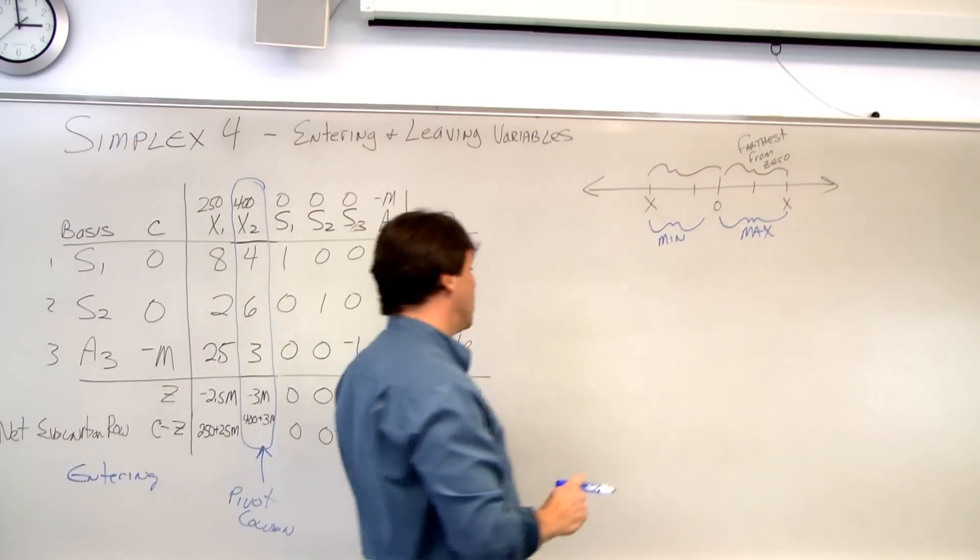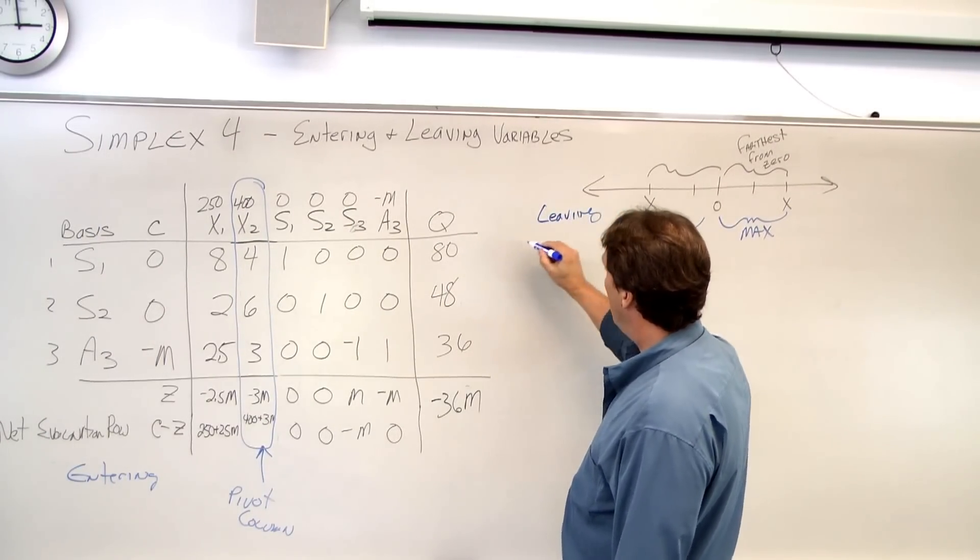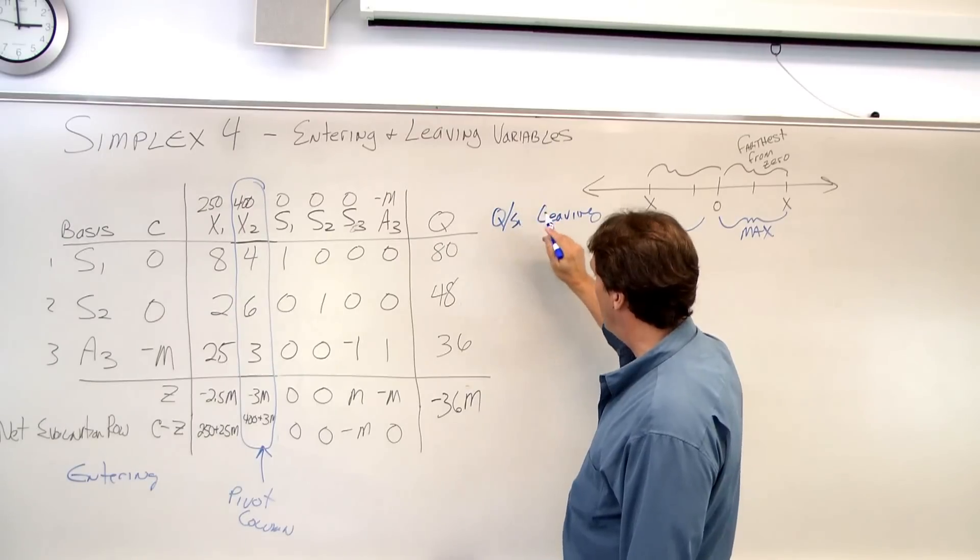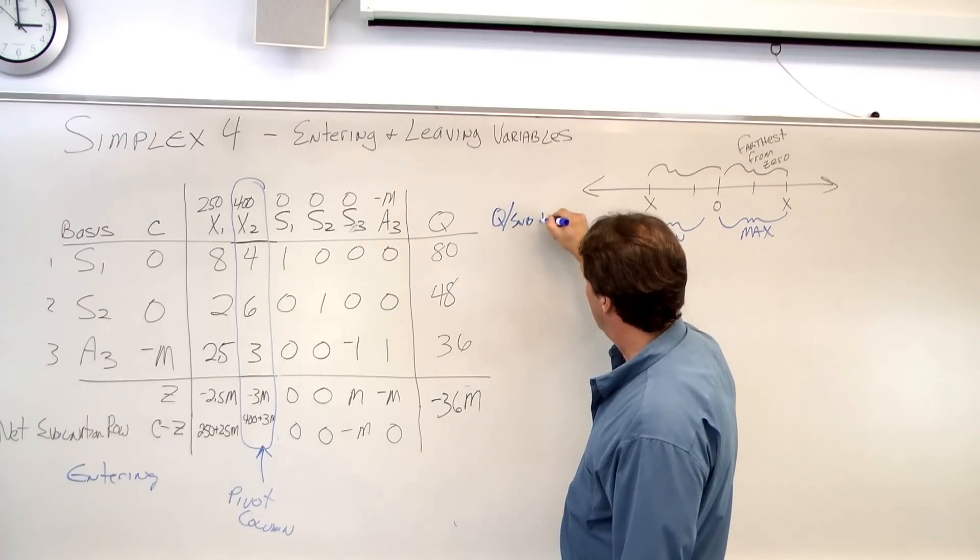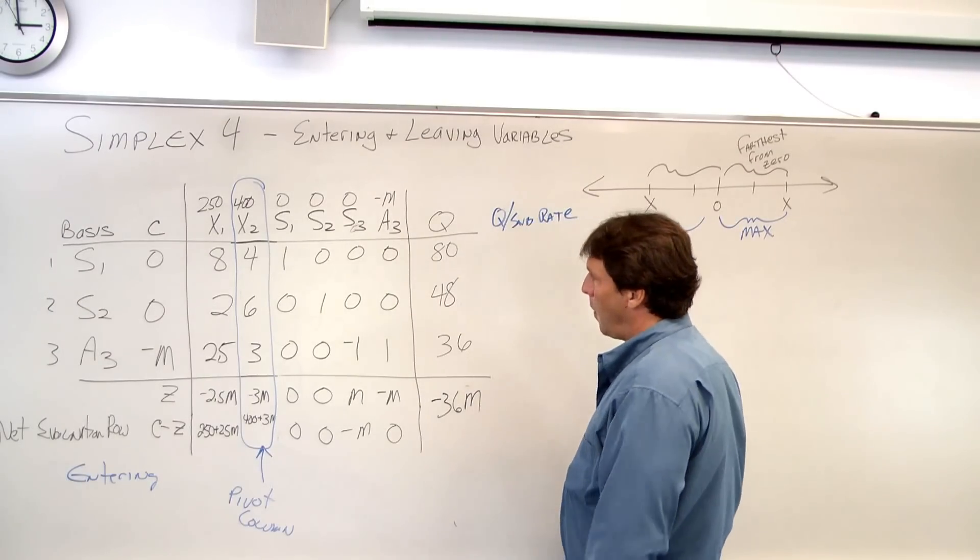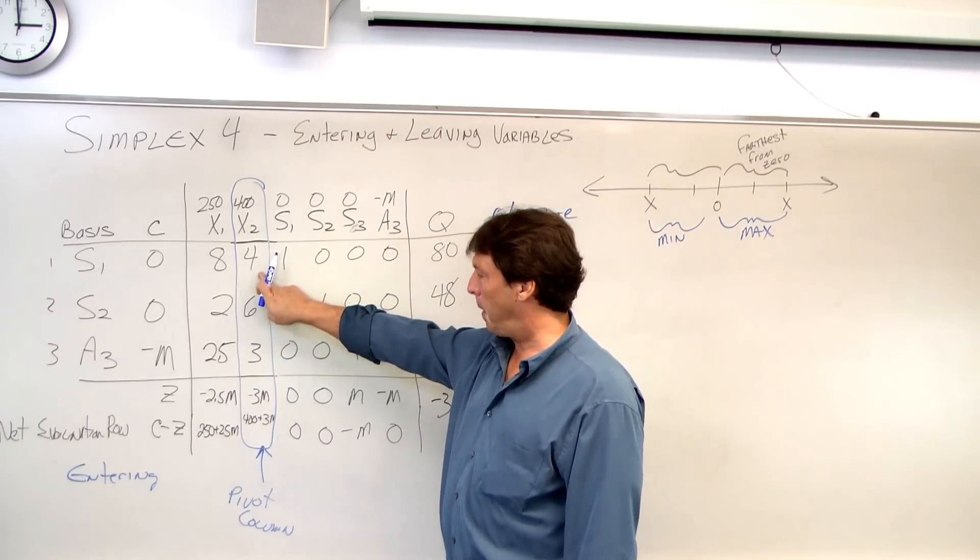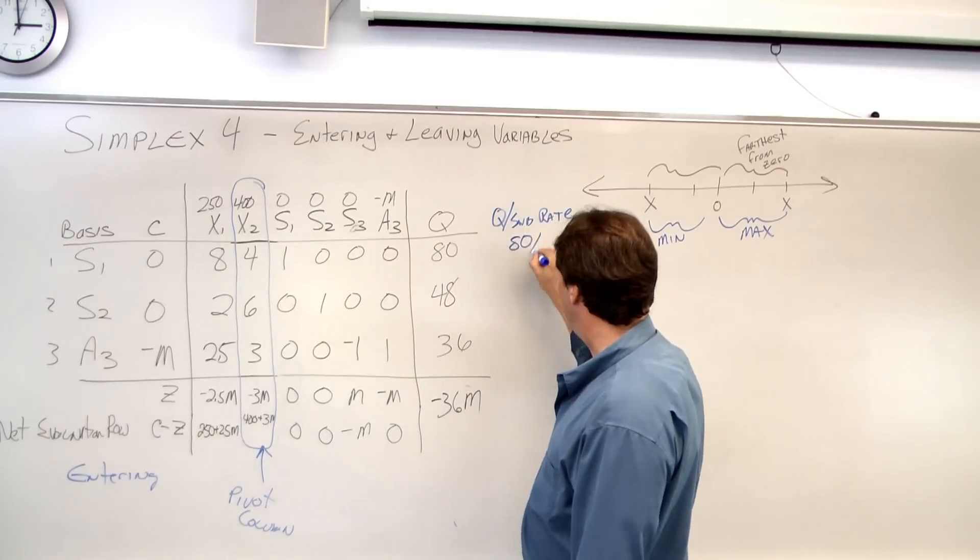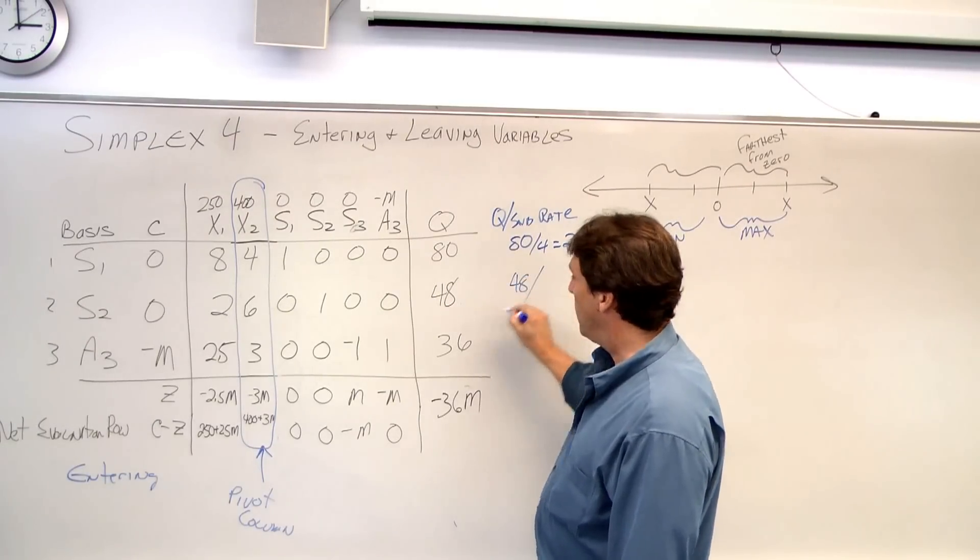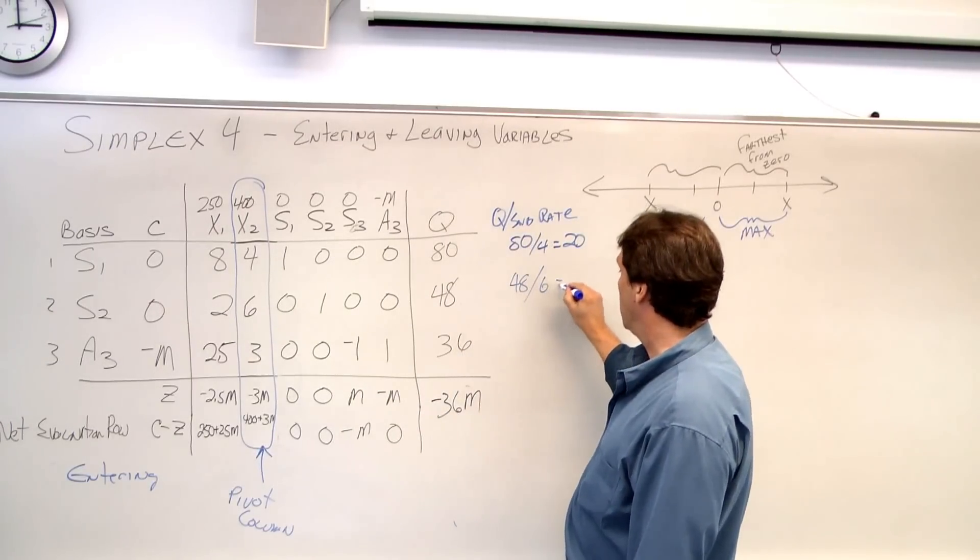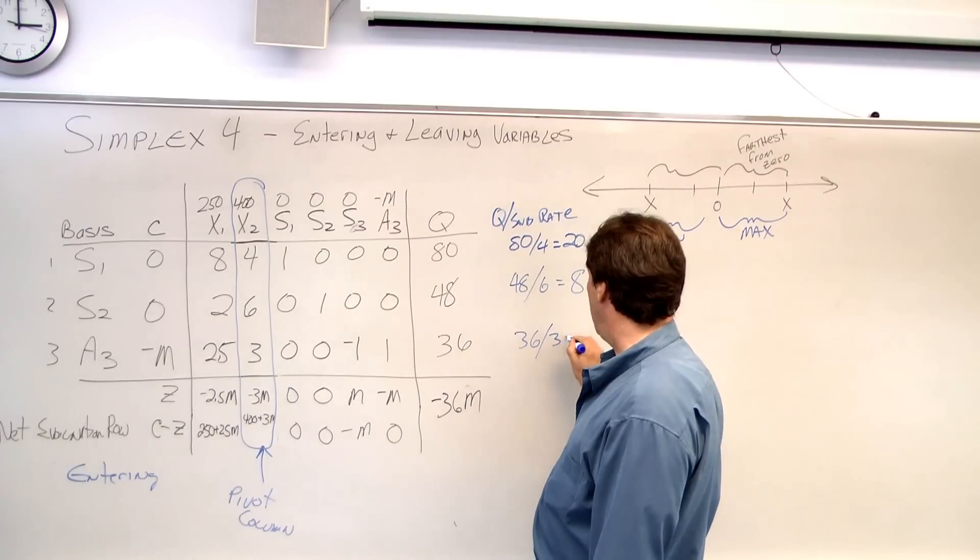All right, so that's our entering. Next, we have to do the leaving. To do the leaving, we calculate our Q divided by our subrate. All right, so we have 80. That's our Q. Our subrate of our pivot column is 4. So this equals 20. We have 48. Again, our pivot column is 6. And we have 36 divided by 3 is 12.